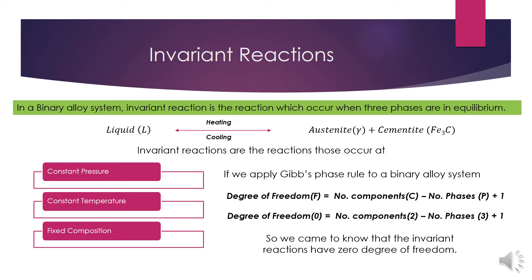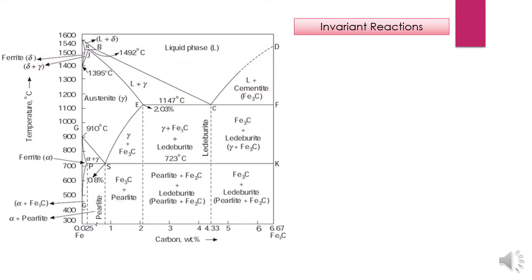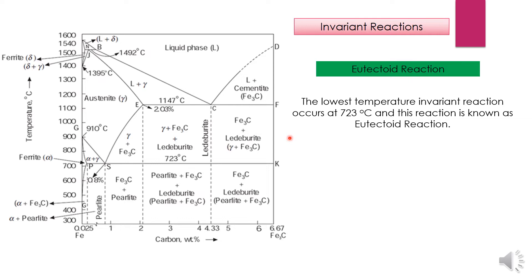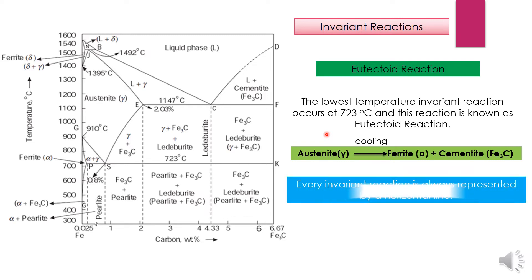So invariant reactions have zero degree of freedom. Now let's start with eutectoid invariant reaction. It's the lowest temperature invariant reaction that occurs at 723 degrees centigrade and is known as eutectoid reaction, in which austenite upon cooling gives you ferrite plus cementite. Keep in mind that every invariant reaction is always represented by a horizontal line.